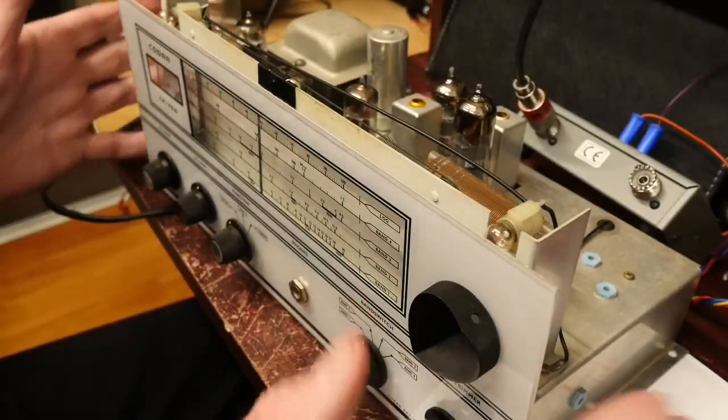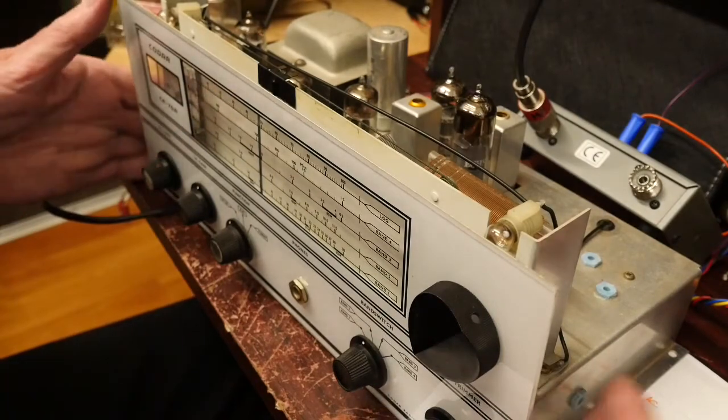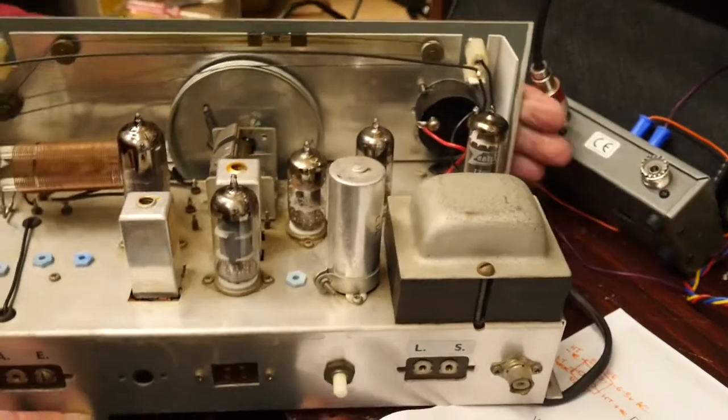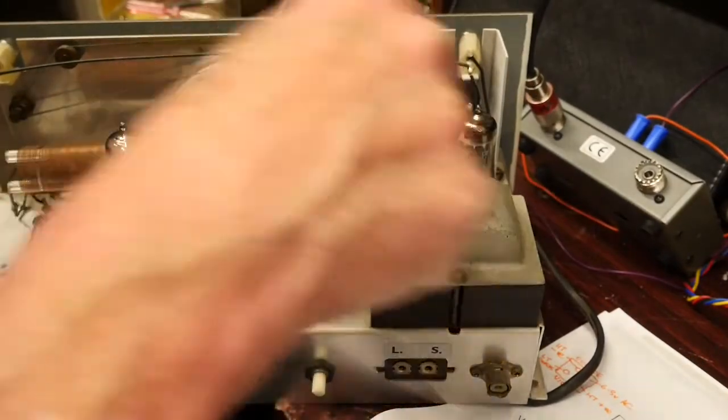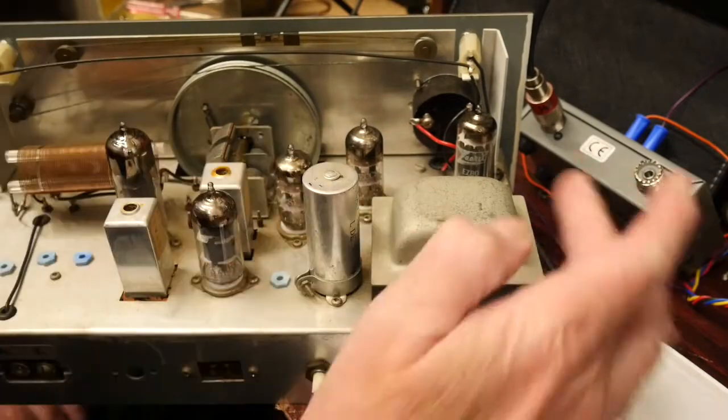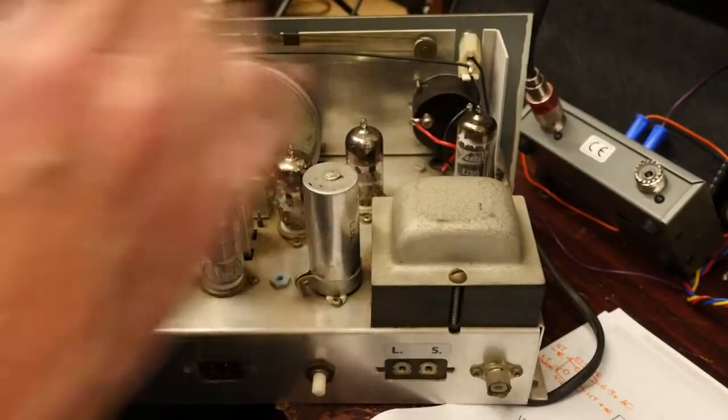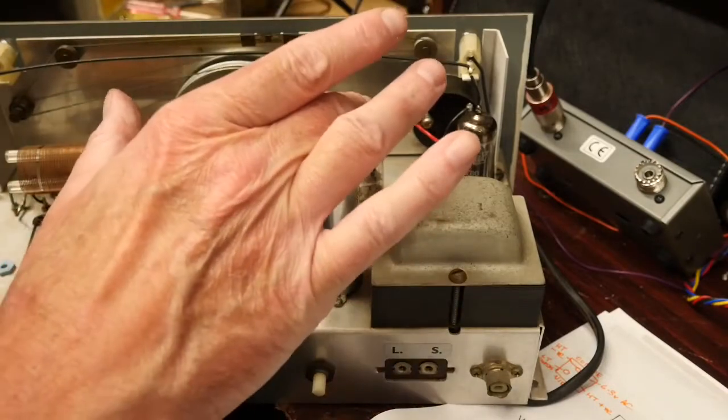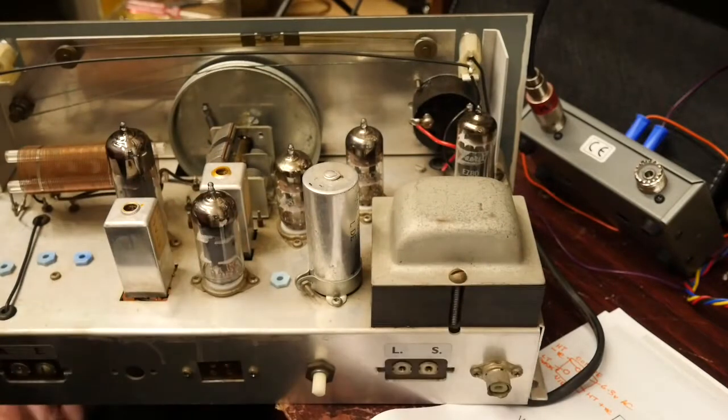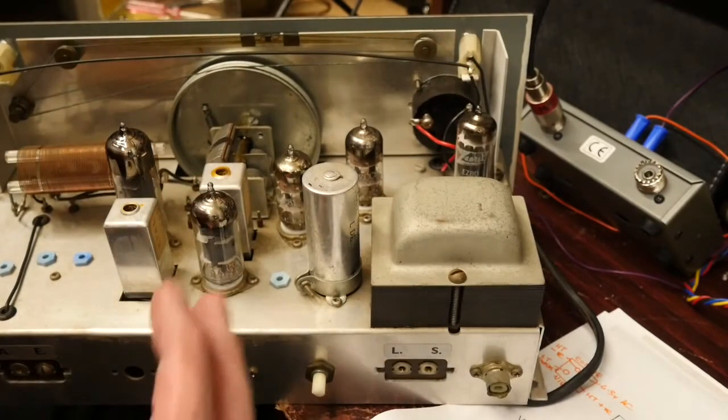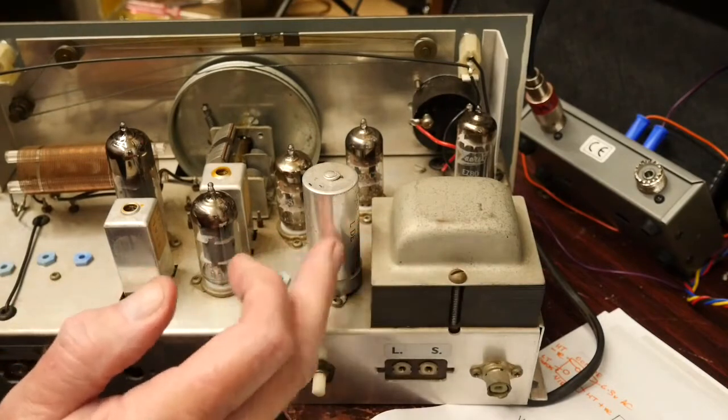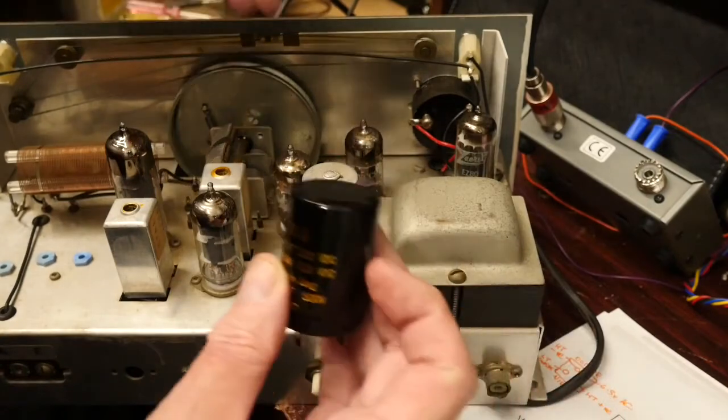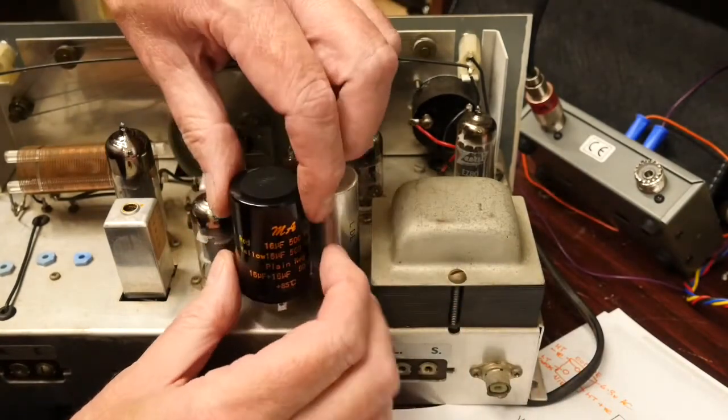Okay, here we are with the cover removed from the Kodar CR70A. As you can see, quite nice and clean behind. Total of five valves - there's a full wave rectifier, a couple of double triodes, and a converter valve here. It's a relatively straightforward single superhet. This is the capacitor that needs to be changed, certainly looks original.